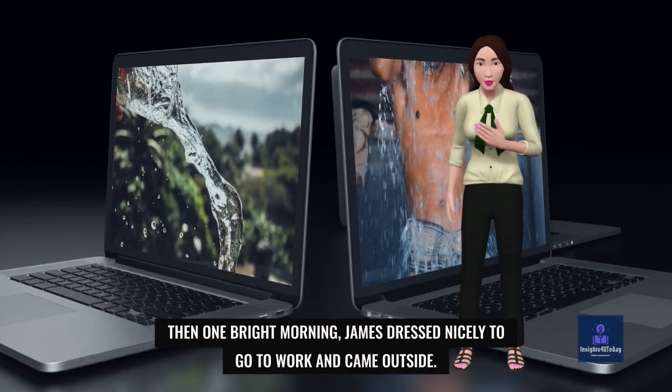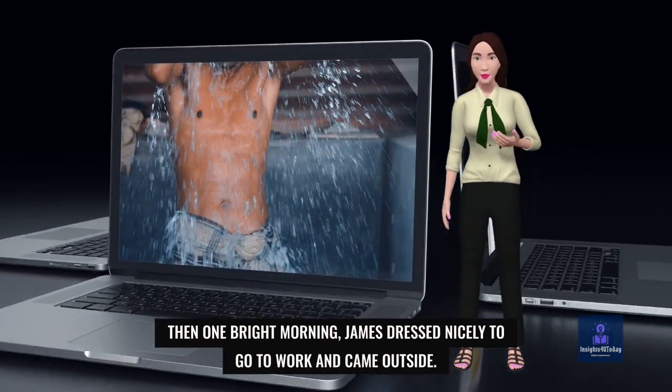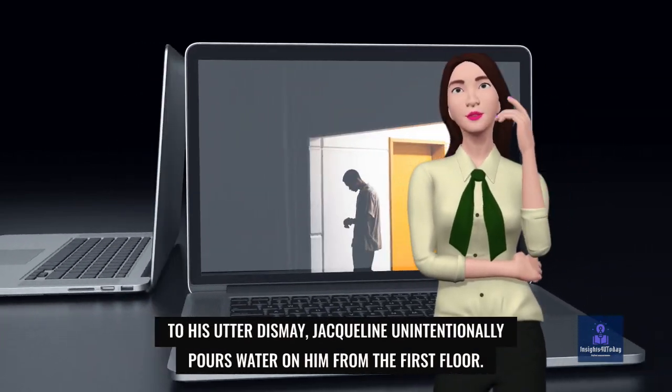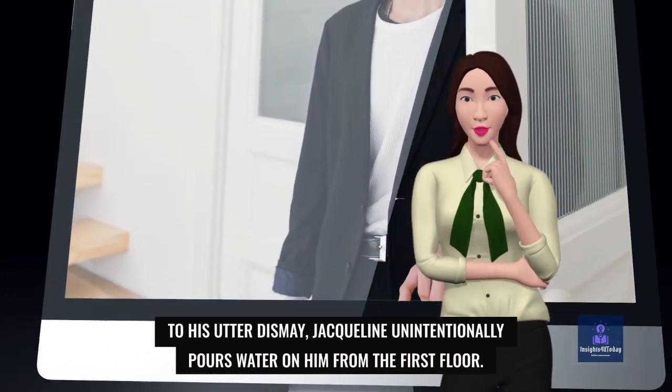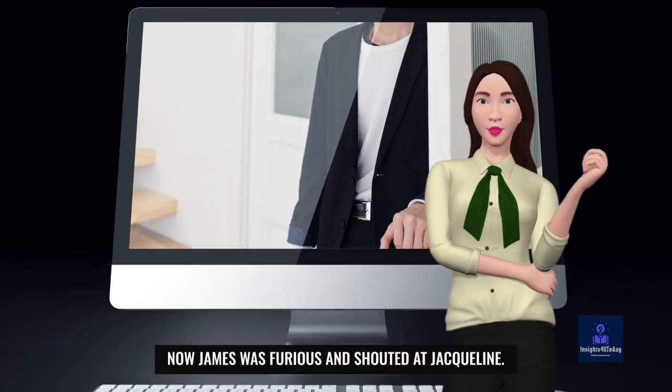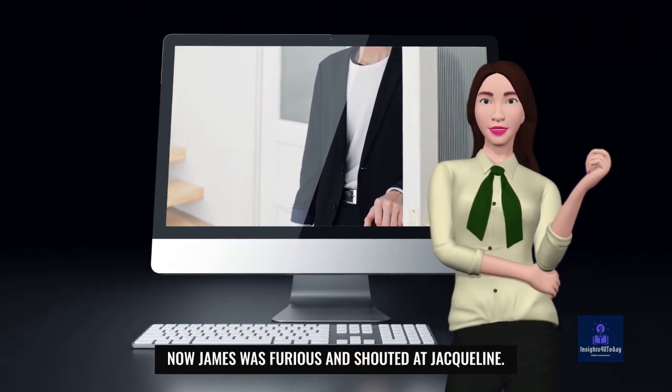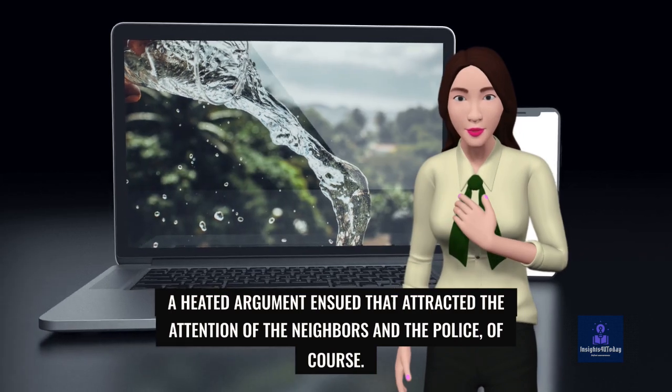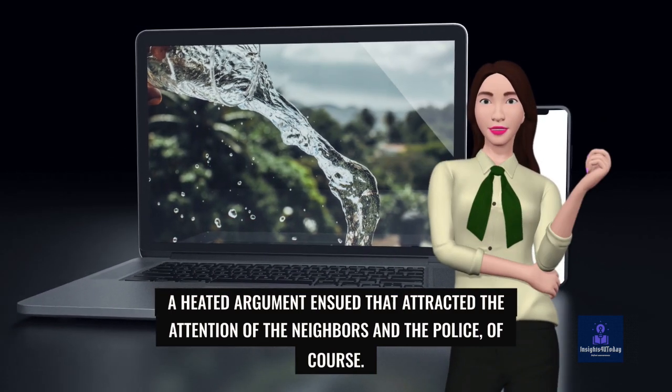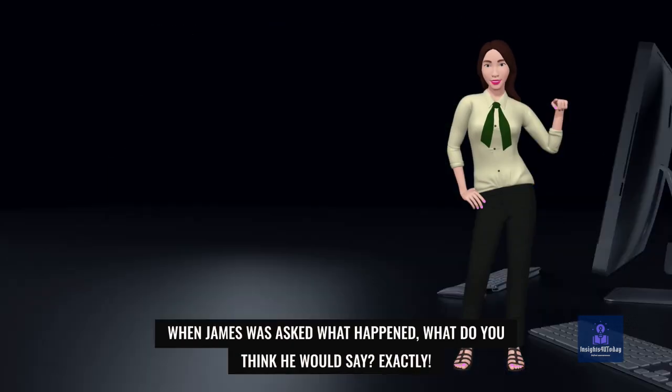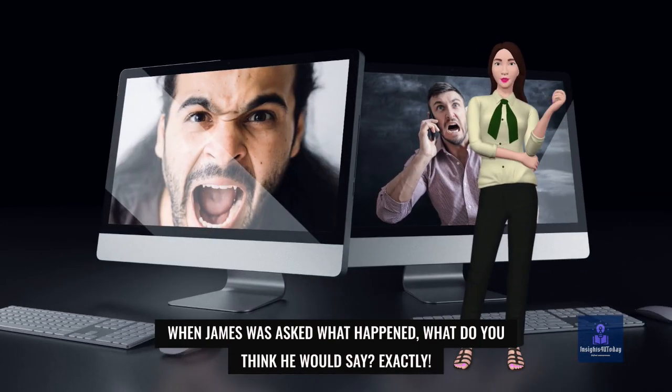Then one bright morning, James dressed nicely to go to work and came outside. To his utter dismay, Jacqueline unintentionally pours water on him from the first floor. Now James was furious and shouted at Jacqueline. A heated argument ensued that attracted the attention of the neighbors and the police, of course. When James was asked what happened, what do you think he would say?